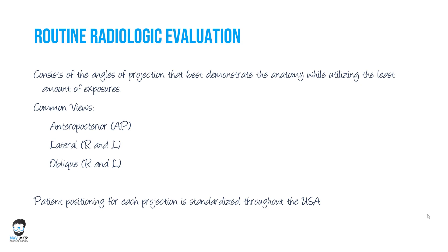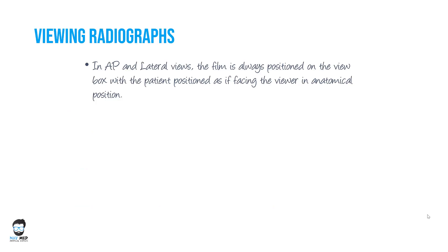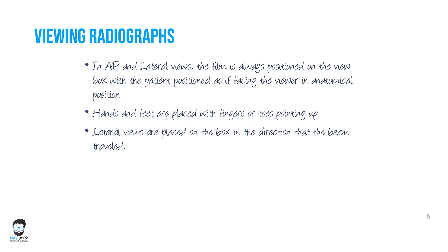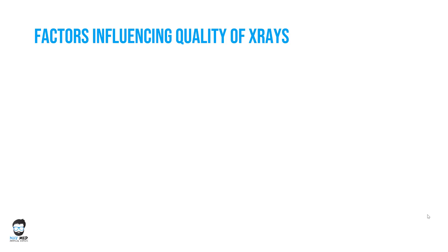When viewing radiographs in AP and lateral views, the film is positioned on the view box with the patient positioned as if facing you in anatomical position. Hands and feet are placed with fingers or toes pointing up — these are the standard positions. Lateral views are placed on the box in the direction the beam traveled. Special markers are used to label right and left, so you must be very careful about which side the x-ray has been done.